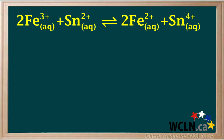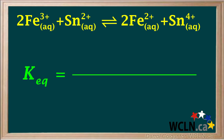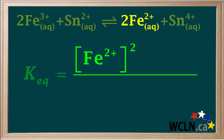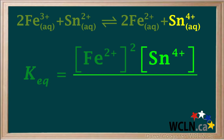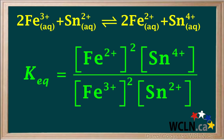Let's consider this reaction. Notice that in this equilibrium equation, all of the species are aqueous. Can we use these in a Keq expression? Because the concentrations of aqueous ions can change, the answer is yes. In the numerator, we have the product Fe³⁺ squared times the product Sn⁴⁺. And in the denominator, we have the reactant Fe³⁺ squared times the other reactant Sn²⁺. So here's the equilibrium equation with its Keq expression.